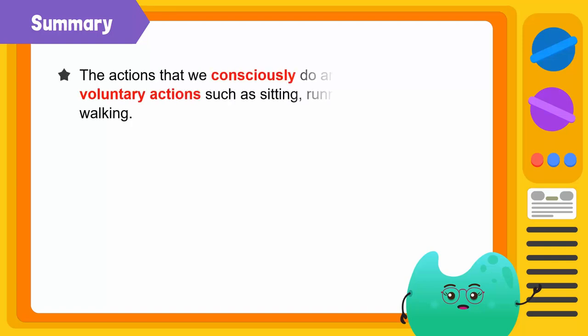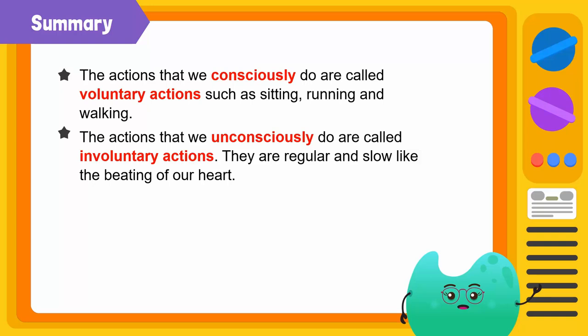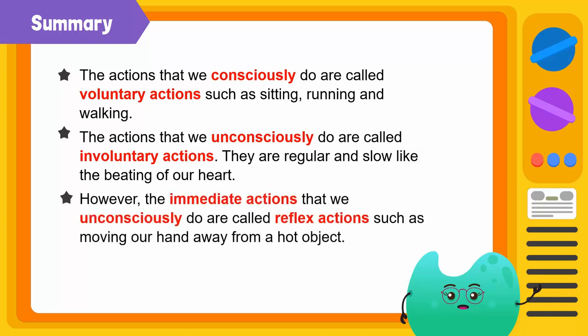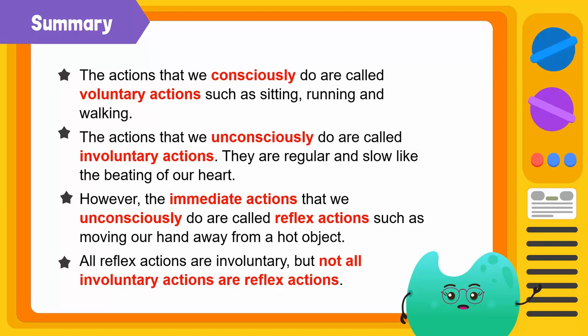To summarize: the actions that we consciously do are called voluntary actions, such as sitting, running, and walking. The actions that we unconsciously do are called involuntary actions. They are regular and can be slow, like the beating of our heart. However, the immediate reactions that we unconsciously carry out are called reflex actions, such as moving our hand away from a hot object. All reflex actions are involuntary, but not all involuntary actions are reflex actions.